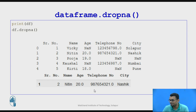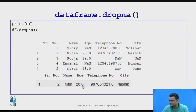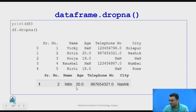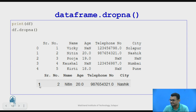Let us take the same example and apply DF.dropna(). All rows that have a missing value are dropped, and we can see that only row number 1 — having index 0 as Nitin, age 20, telephone number as given, and city — is printed. Row index 0 was dropped because age was missing, row 3 was dropped because telephone number and city were missing, and similarly rows 4 and 5 were dropped. Only row number 2 with index 1 is printed because it has all values present.